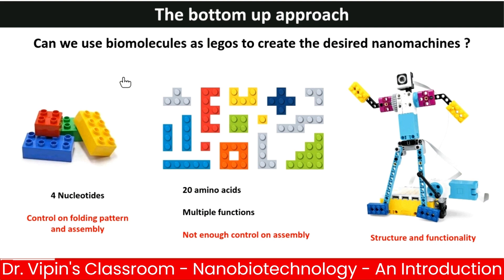What we want is to use biomolecules as legos to create a desired nanomachine with a specific structure and function. We have four nucleotides from DNA and 20 different amino acids from proteins. The advantage of using DNA is that you can predict exactly how it will fold, because you know it follows the base complementarity rule — A pairs with T, C pairs with G. Given a primary DNA sequence, you can easily predict the secondary structure it will form, whether in self-assembly or guided assembly using staples to obstruct certain regions from folding.